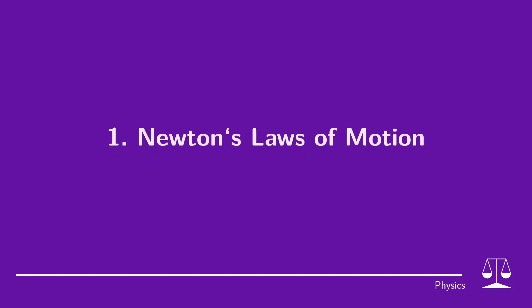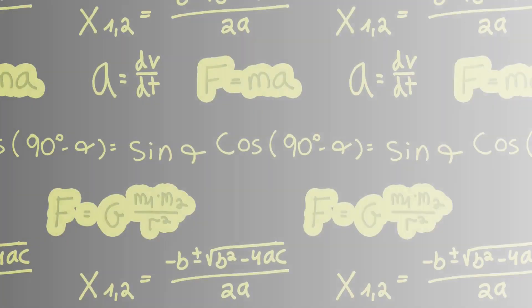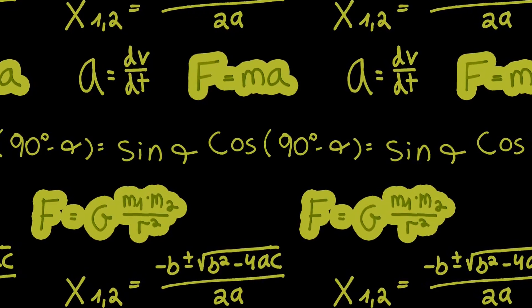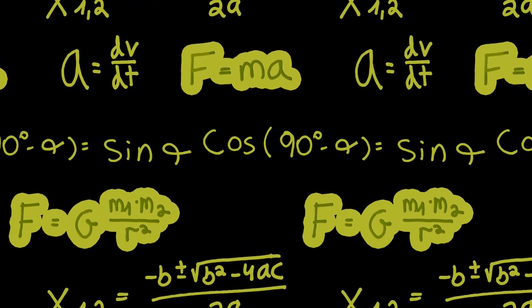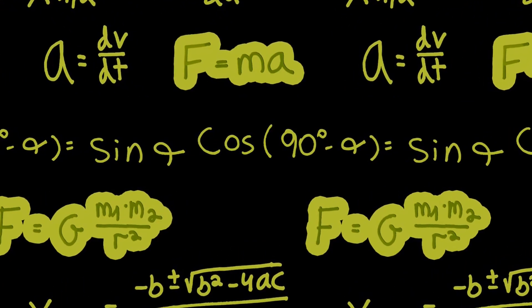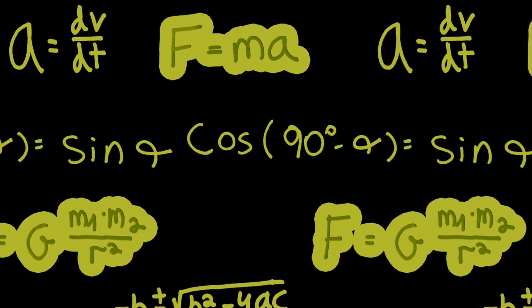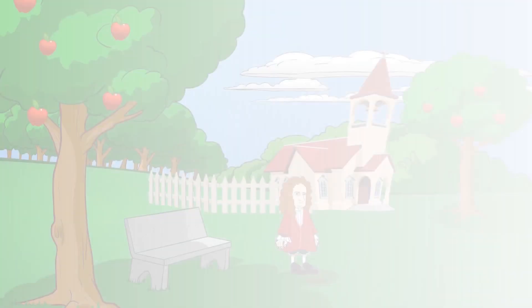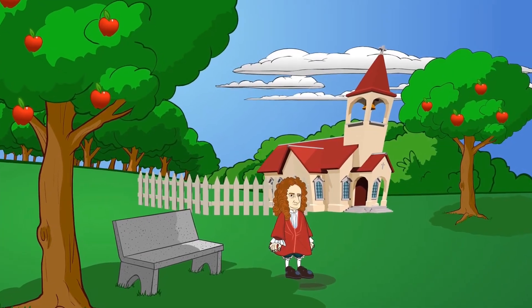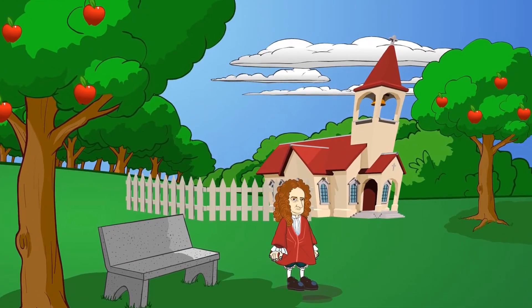The first discovery is Newton's laws of motion. Sir Isaac Newton was an English physicist, mathematician, and astronomer whose discoveries and theories changed our understanding of the physical world. His work became the basis of classical mechanics, and his three laws of motion are considered to be among the most important physical principles ever.